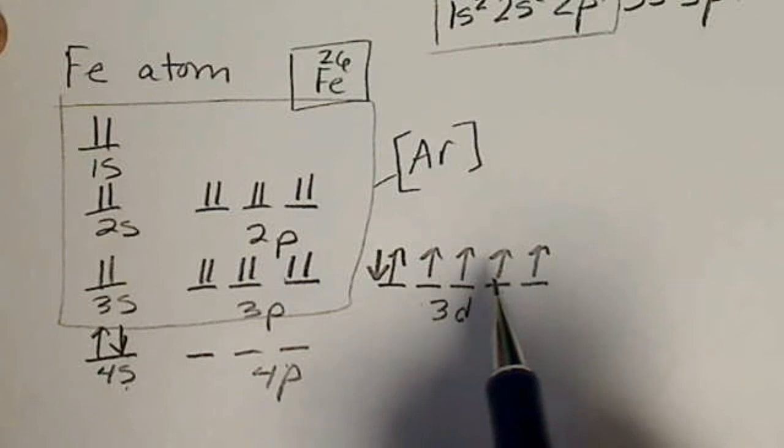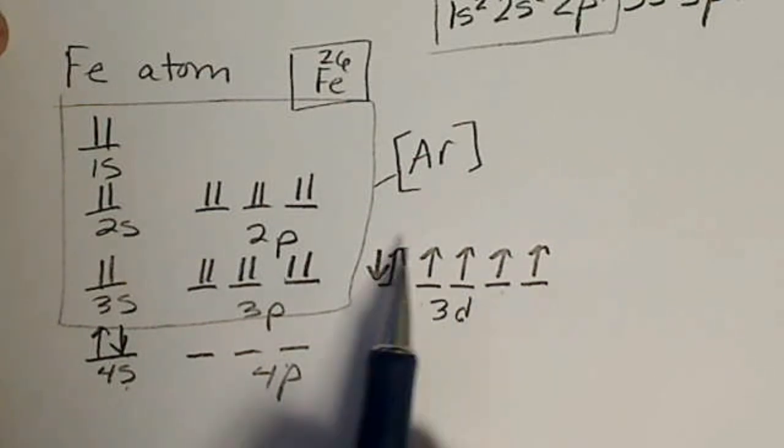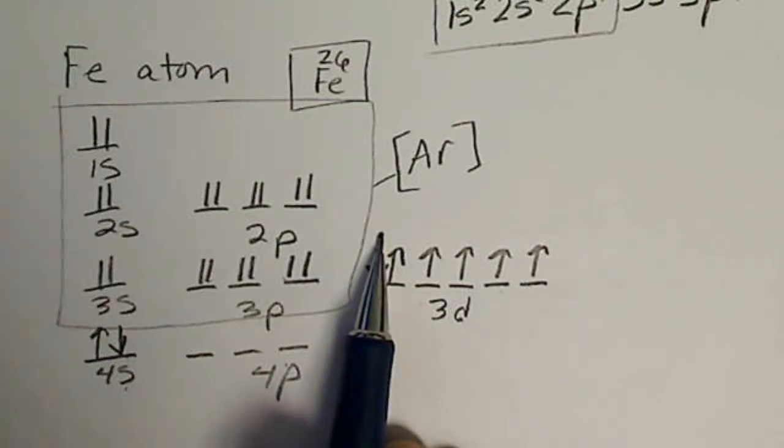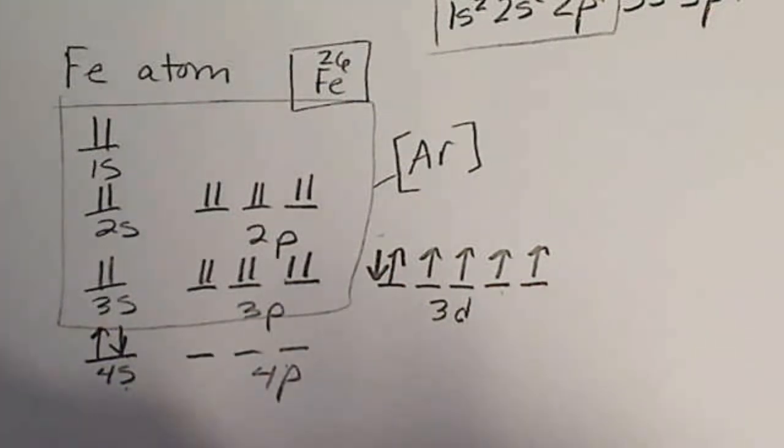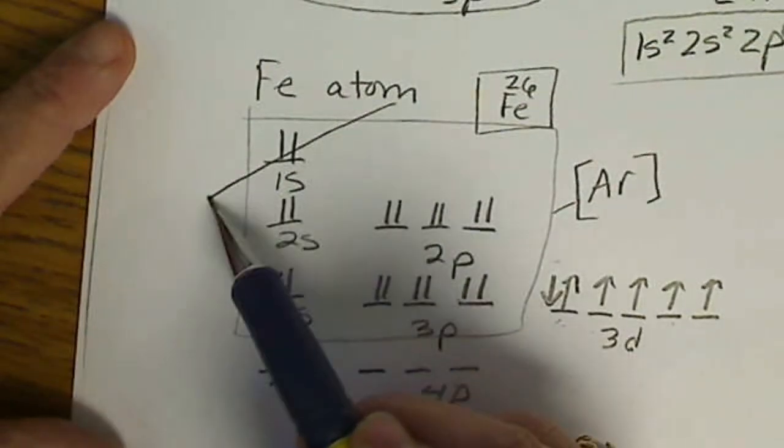When filling electrons within a subshell, we keep the electrons unpaired as long as possible, and their arrows point in the same direction. An atom has lower energy when all the electrons have the same spin. No more than two electrons can go in any orbital.